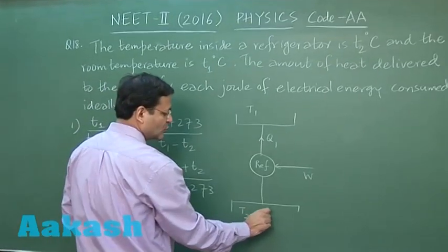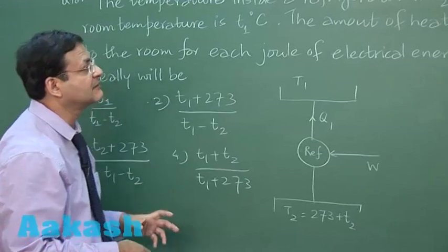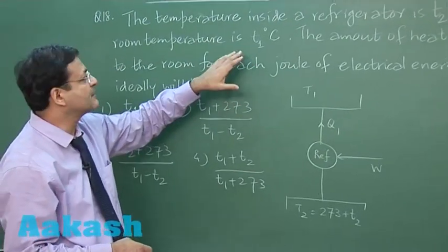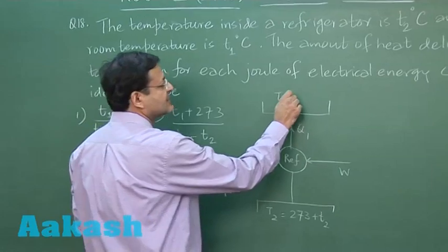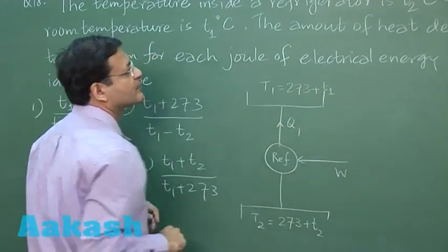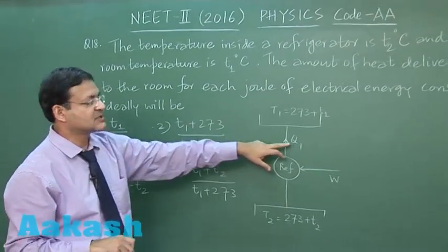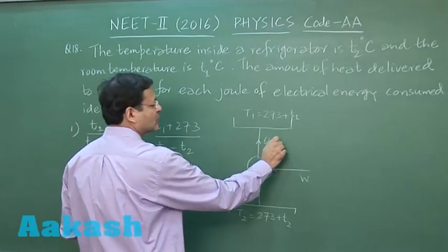So it is saying that the temperature inside a refrigerator is T2 degree Celsius, so this will be 273 plus T2 in Kelvin, and the room temperature, that is the surroundings temperature, is T1 degree Celsius, so this is 273 plus T1. Now the amount of heat delivered to the room, this is Q1 you are supposed to calculate. Let me call it X.